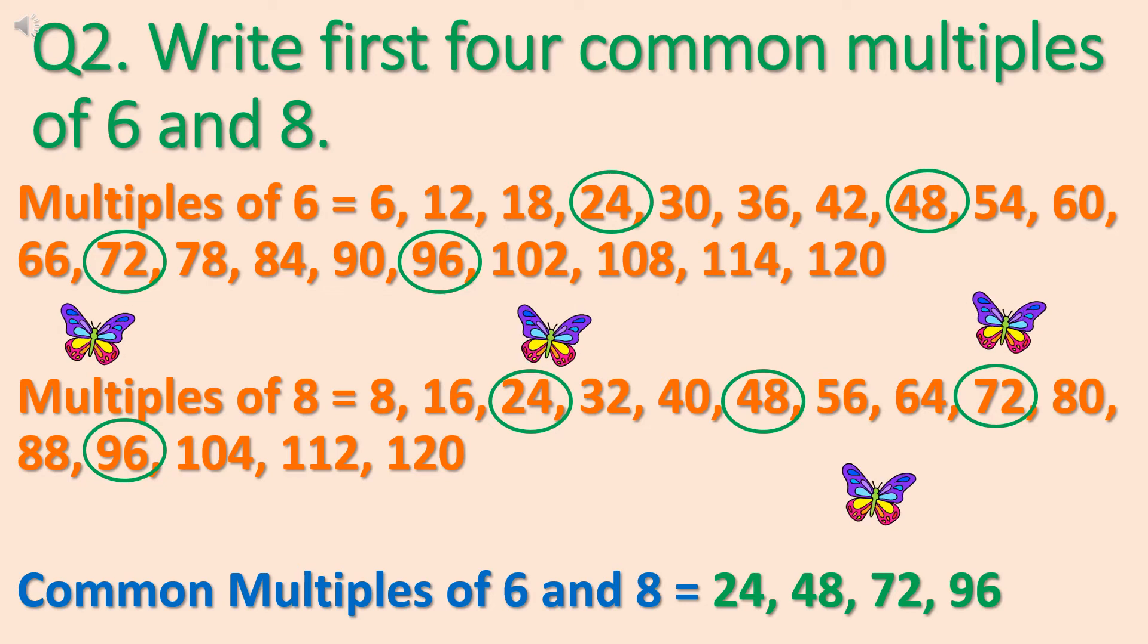And next we will find out the multiples of 8. 8, 16, 24, 32, 40, 48. Again you can find the multiples of 8 by multiplying 8 by different numbers. Now next what will we do? We will find out the common multiples.